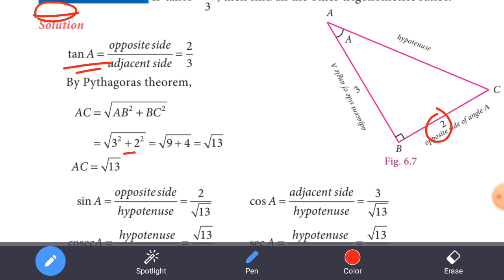We can find the hypotenuse. If that is equal to root 13, the hypotenuse is root 13.